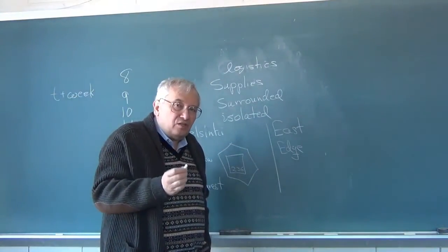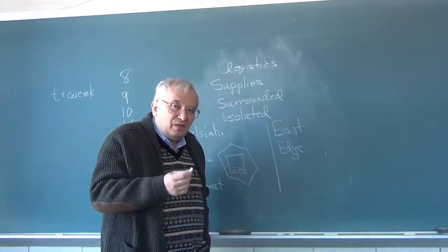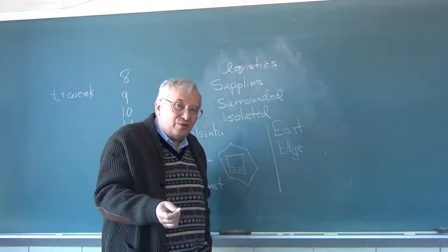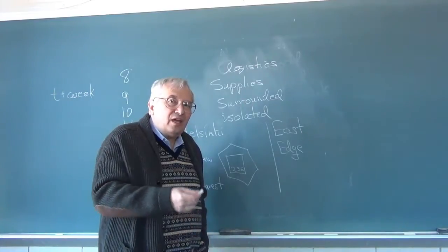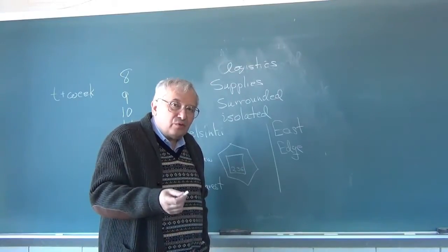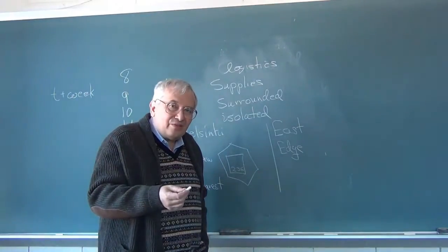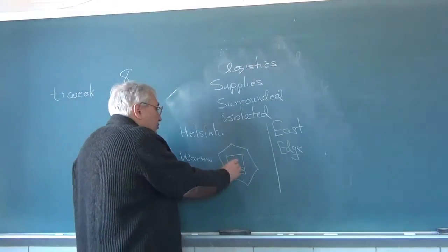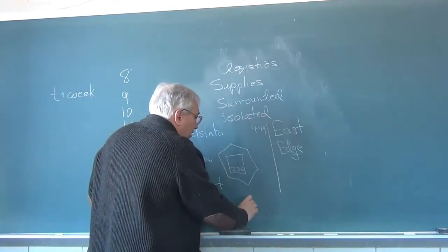In order to be in supply, a unit must be able to trace a path from its location to the supply source. Now, the complication in tracing to the supply source is there are certain things you cannot trace through. You have to stay on the board rather than going off it. You can't trace it through water like the Gulf of Bothnia. You can't trace it through a neutral country. That's basically Turkey. And you cannot trace it through enemy zones of control or enemy units.